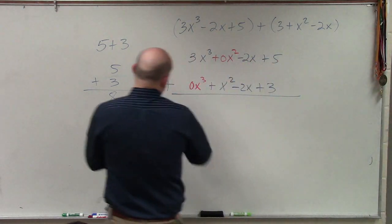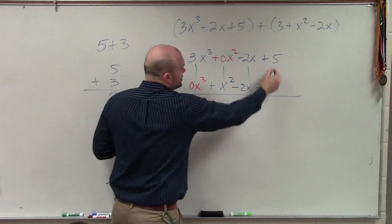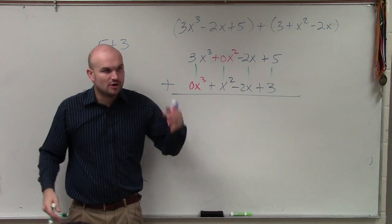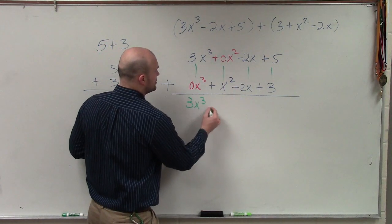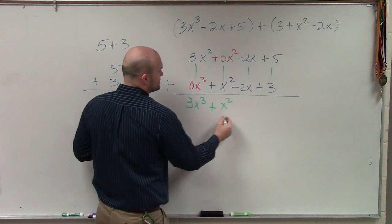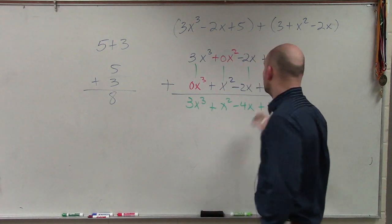So my final answer is now when I add them vertically—because notice, do you guys see how these are all like terms? So if you align them in descending order, now you can just add them vertically. So my final answer is 3x cubed plus x squared minus 4x plus 8.